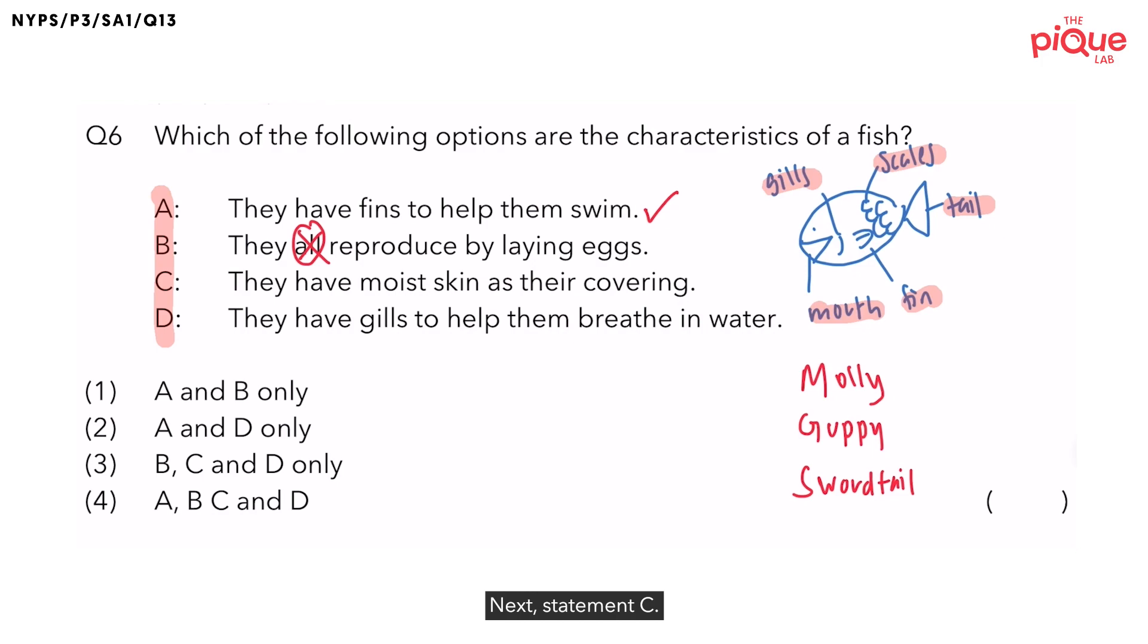Next, statement C. They have moist skin as their outer covering. Is this true? This is not true. Earlier, we have already said that their outer covering of fish is scales, not moist skin. So, let's cancel the word moist skin and write scales. As a form of revision, what group of animals have moist skin as their outer covering? The animal group is known as amphibians.